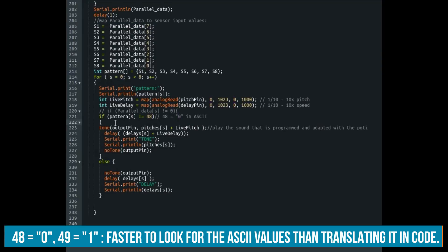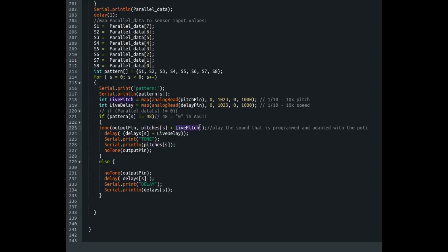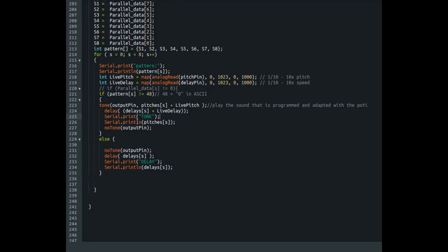If that tone is in there, we will use the pitch that we have set and add the live pitch that we can dynamically do. It also will set the delay and add the live delay to it, and then it will do this tone. And if the pattern says this sound is inactive, it will only do the delay.